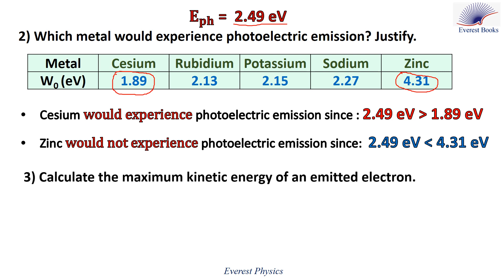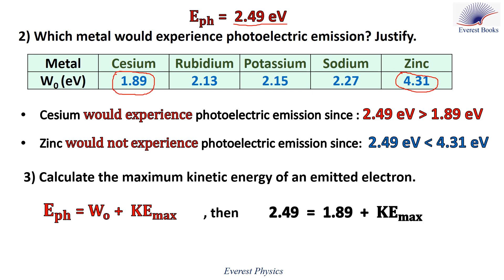For number three, calculate the maximum kinetic energy of an emitted electron using Einstein's equation of the photoelectric effect: E_photon equals W₀ plus KE_maximum, where all quantities must be in the same unit. With E_photon equals 2.49 electron volts and W₀ of cesium equals 1.89 electron volts, therefore KE_maximum equals 0.60 electron volts.